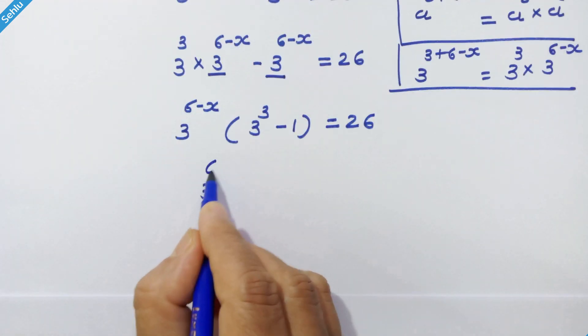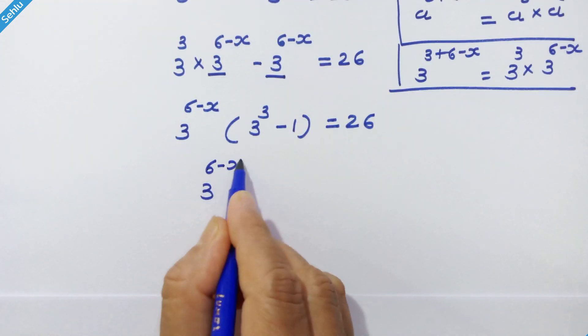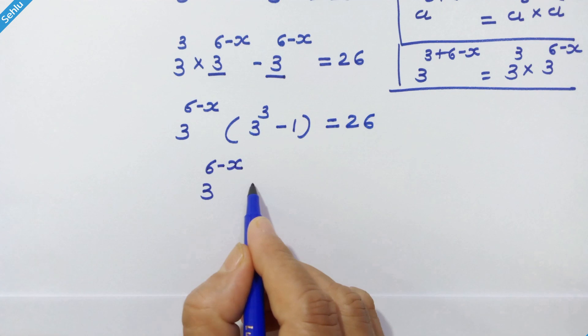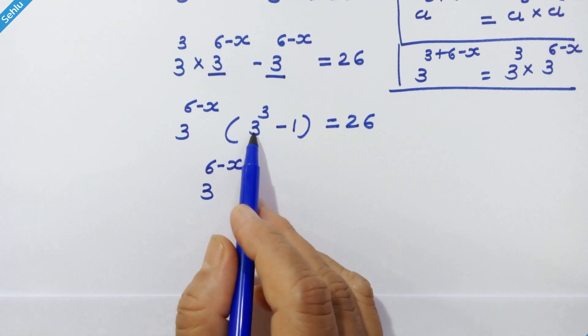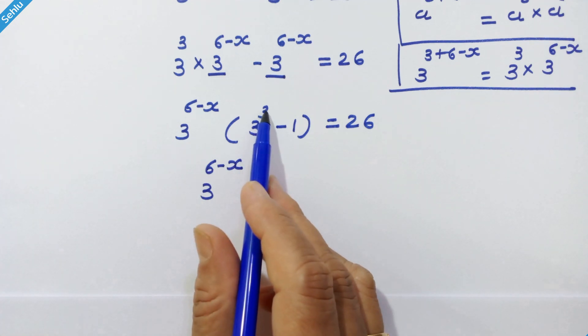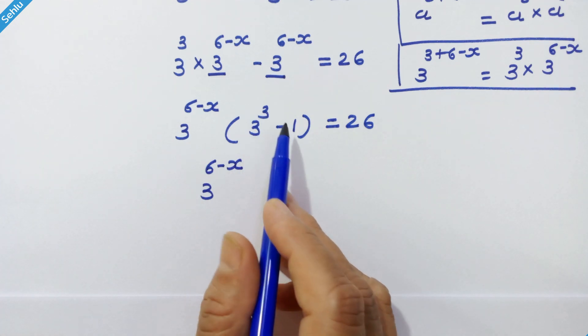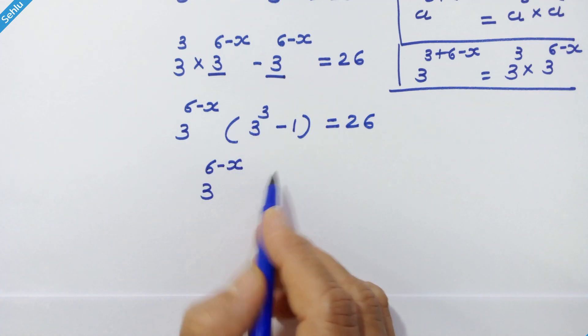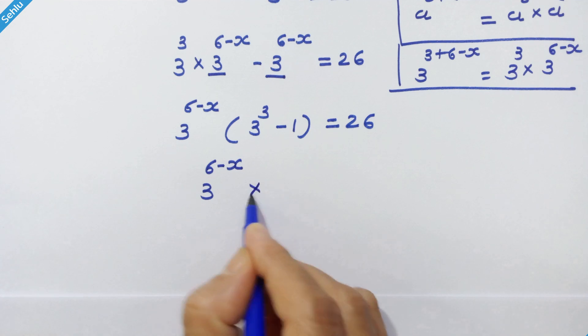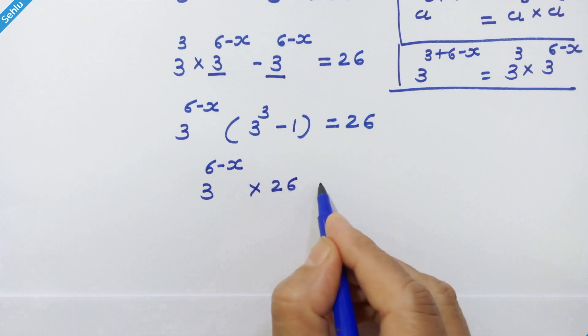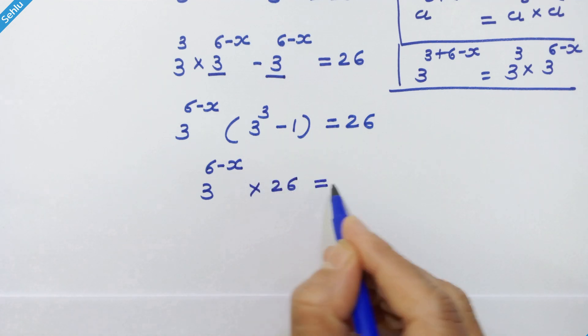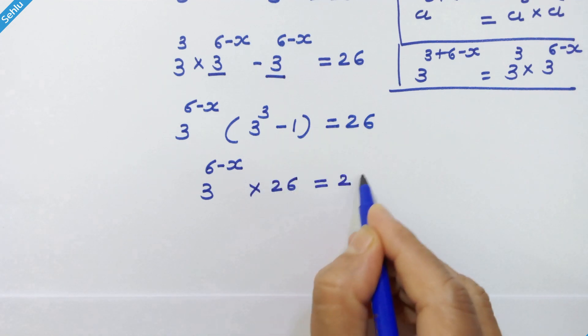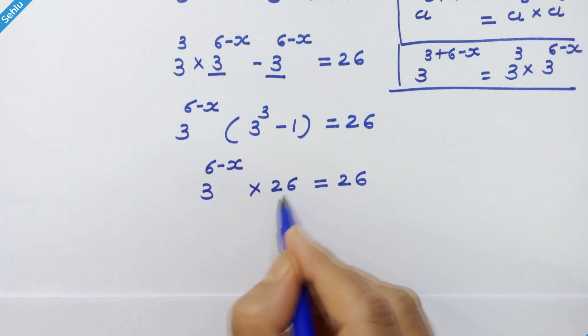Now, 3 cubed is 27, so 27 minus 1 is equal to 26. So we can write 26 is equal to 26.